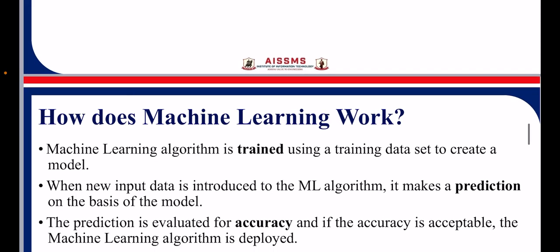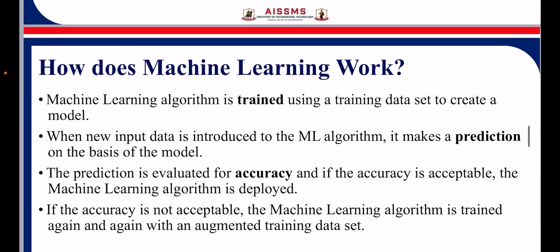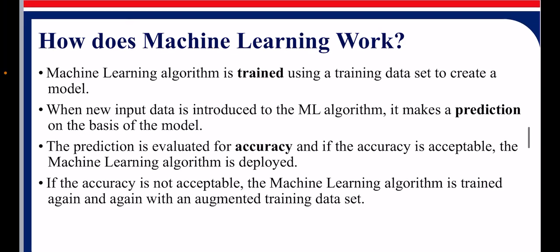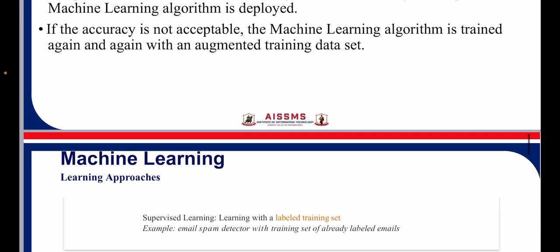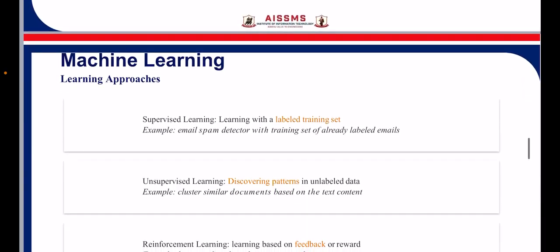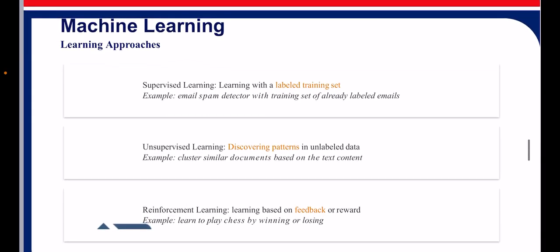How does machine learning work? We train our machine learning model through various cycles. After training, we test whether the model predicts correctly or not. If it gives good accuracy, we can deploy that machine learning model. There are three approaches: supervised learning, unsupervised learning, and reinforcement learning.